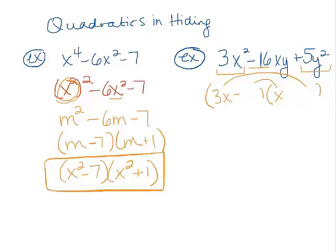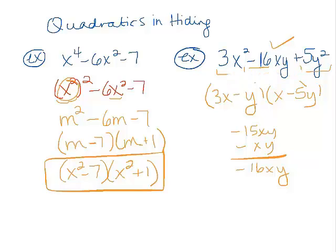Let's try the other way. What if we did minus y and minus 5y? Now we'd get negative 15xy minus 1xy. That totals to negative 16xy. Exactly what we're looking for. So it looks like the winning combination is the 3x minus y and the x minus 5y.